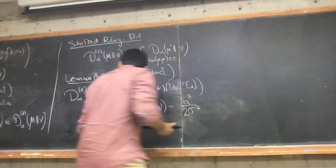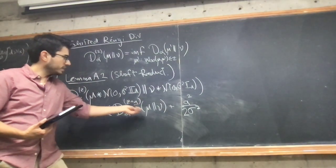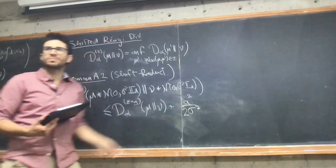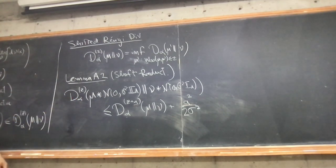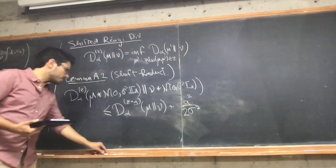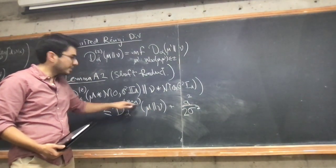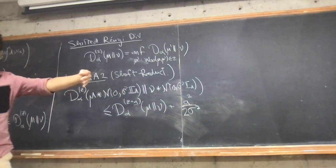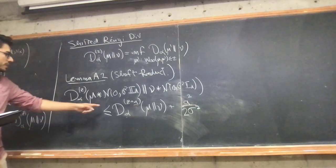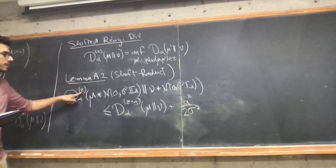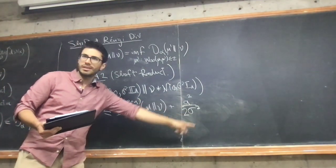Note that there are two parameters: alpha and a — be careful. Here is a and here is a, and a is an extra parameter which you can choose at will. Suppose that you start with certain guarantees for a larger shifted range divergence between mu and nu. After Gaussian convolution, you can get a tighter shift at the cost of using that shift in this term.